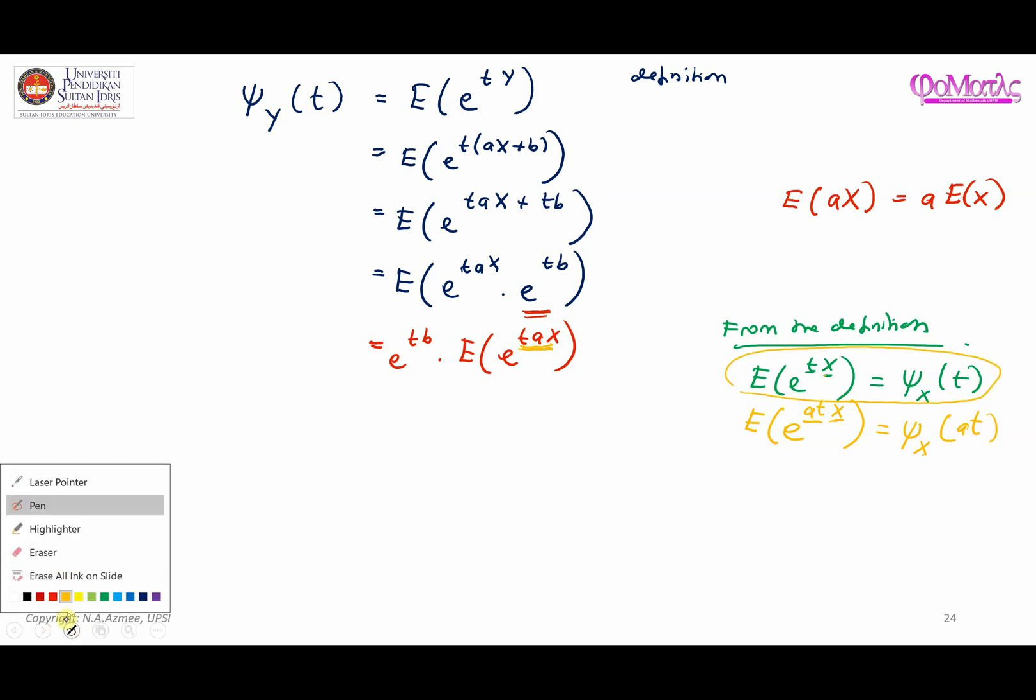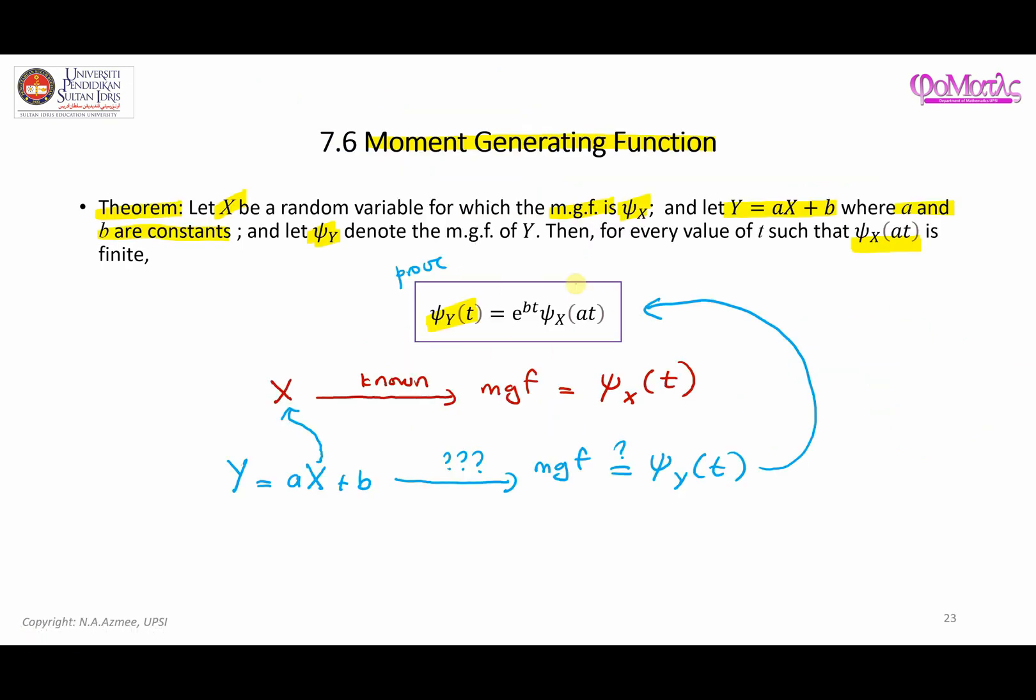Therefore, the result here is going to be e^tb, then this is the mgf for X. Here is our random variable X, and it depends on at. At or ta is the same thing. So then the result here, the final line, is proof that the statement given here is true.